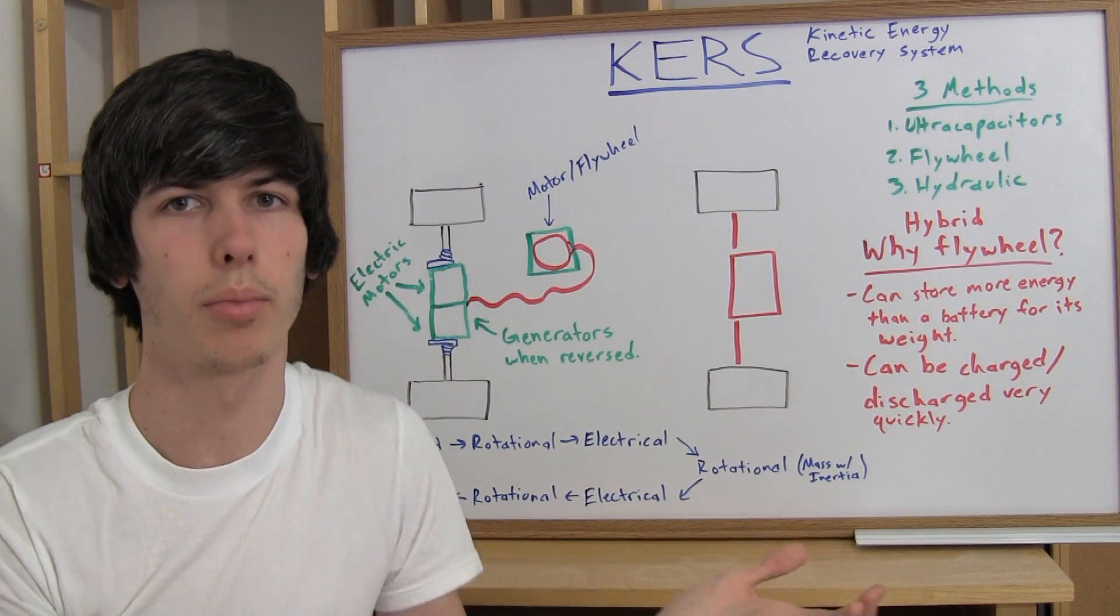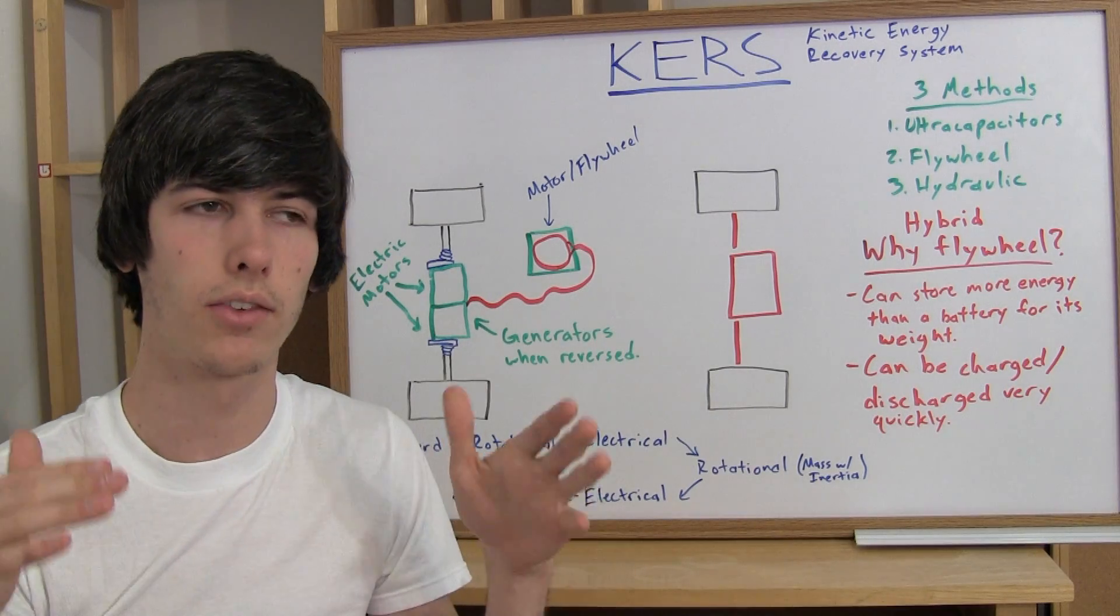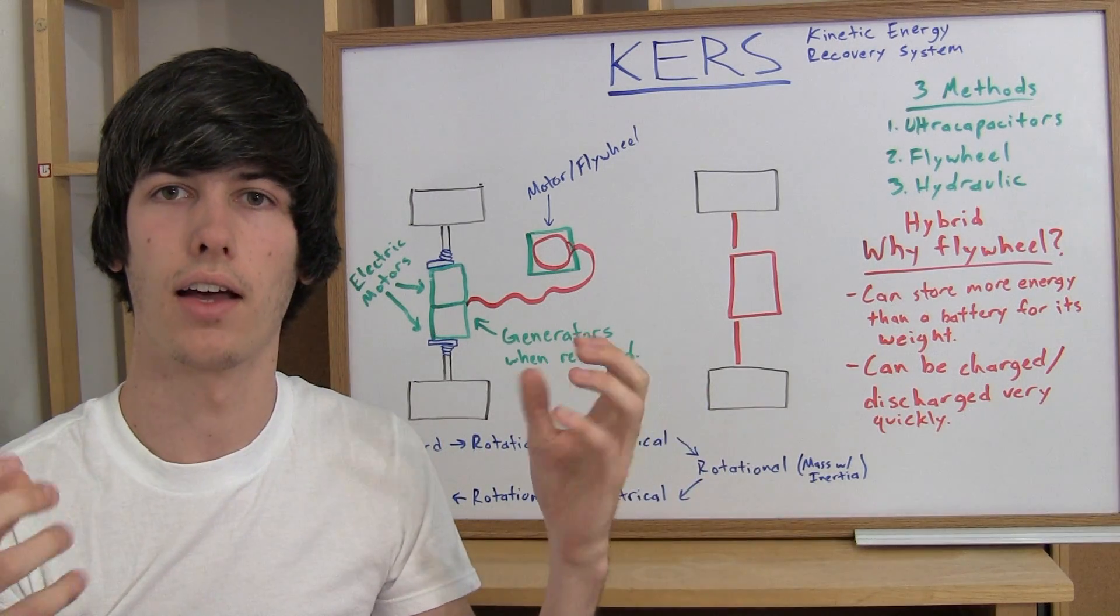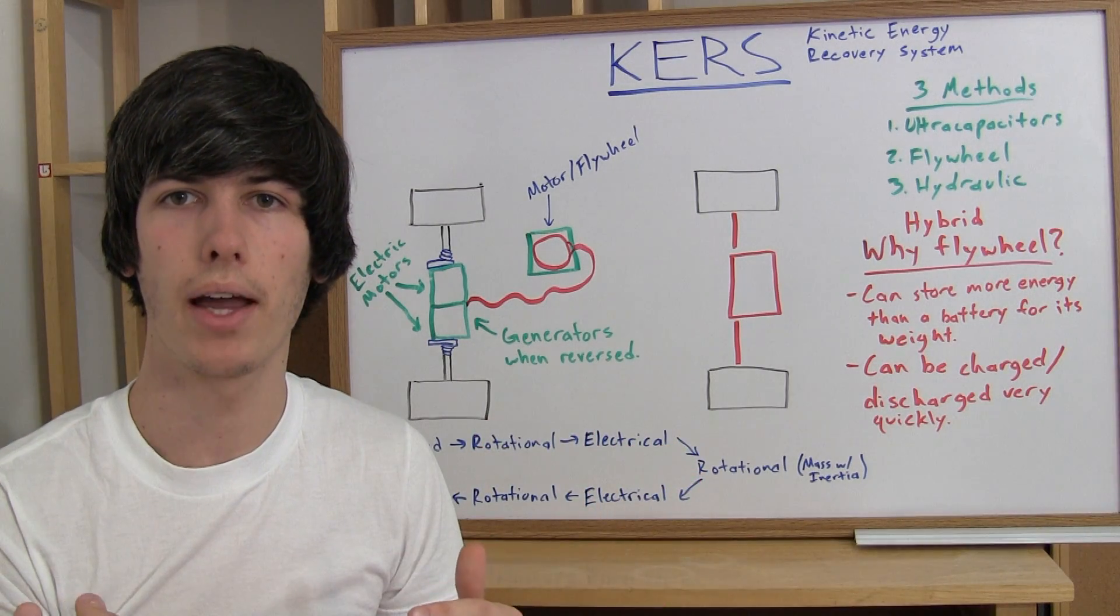There's things like regenerative braking, which the Toyota Prius uses. What that does is when you brake, it sends the energy from your braking, rather than turning it all into heat, some of it goes to charging your battery.